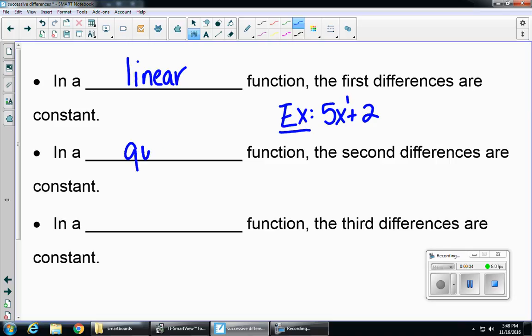In a quadratic function, we know that our second differences are constant. An example of a quadratic function would be 4x squared minus 4x plus 3. And the reason that it's quadratic is because we have an exponent of 2.